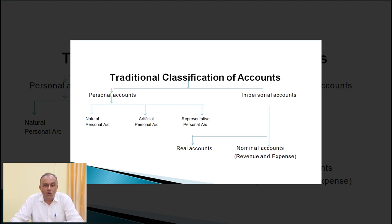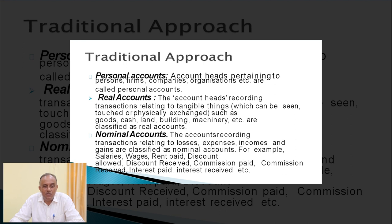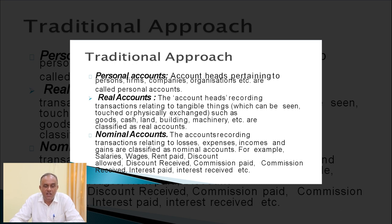Real accounts are accounts relating to tangible things which can be seen, touched, and physically exchanged — such as goods, cash, land, building, and machinery. Nominal accounts record transactions relating to losses, expenses, incomes, and gains — for example, salaries, wages, rent, discount allowed, discount received, commission paid, commission received, interest paid, and interest received. Those are the examples of the traditional approach.